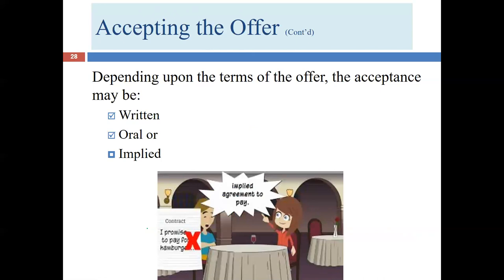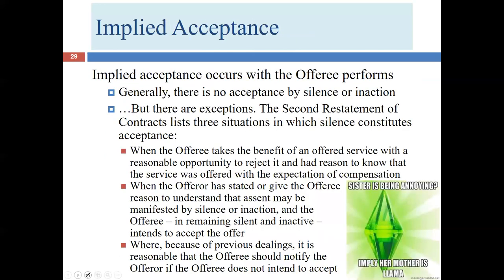It would be silly if every time I went to a restaurant the waiter presented me with a formal written contract to sign before taking my order — that would add bureaucracy with no benefit, because everybody who's been in the United States knows how restaurants work. Even though it's an implied offer and an implied acceptance, it still counts. An implied acceptance occurs when the offeree performs.